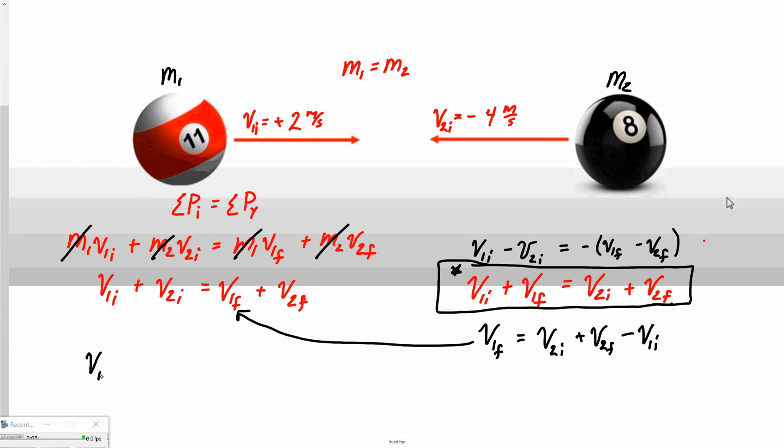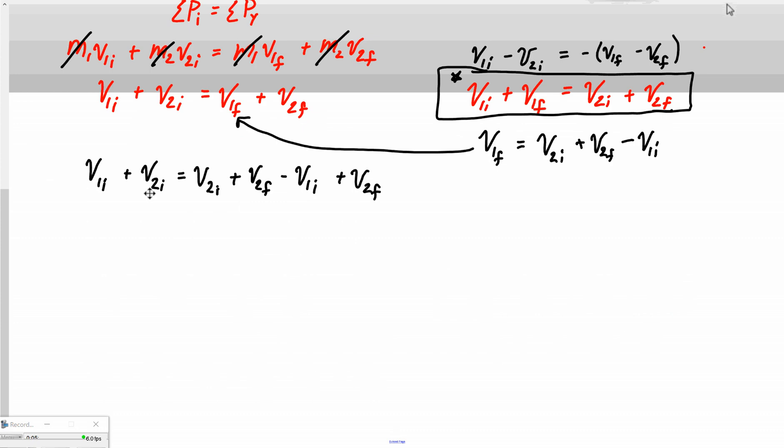And now what I want to do with this is I'm going to bring it right back over and I want to substitute it into this other equation. So let's do this. Let's rewrite this: v1_initial + v2_initial equals, now in place of v1_final over here, I'm going to sub in that big ugly thing. And so we'd end up with what? v2_initial + v2_final - v1_initial + v2_final. Guys, the heavy lifting is over. The only thing left to do is let's try and condense this thing down a little bit.